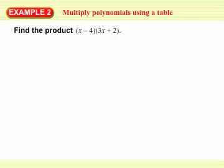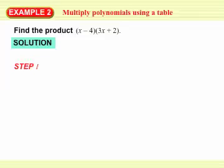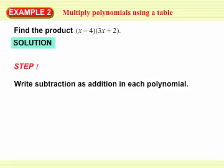Next, we're going to multiply two polynomials together using a table. Here's an example: let's say that I want to multiply together x minus 4 and 3x plus 2. The first thing I want to do is rewrite any subtraction as plus a negative number. This will make it easier to keep track of which negative signs go with which terms. So I'm going to rewrite the first expression, x minus 4, as x plus negative 4.